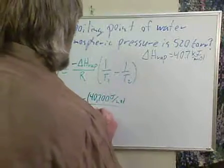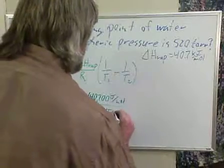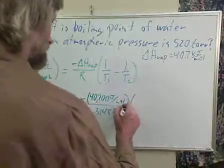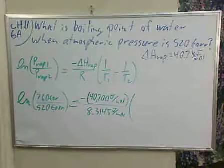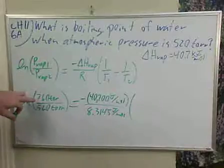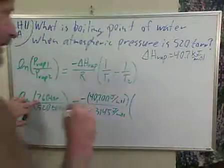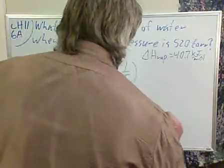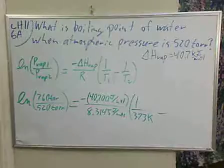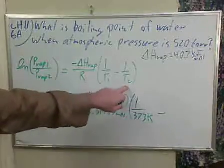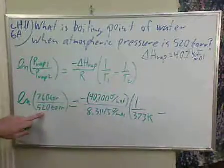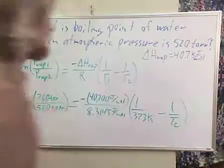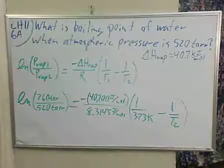And R, of course, is 8.3145 joules per mole kelvin. And it doesn't matter what we use for one and two of this, as long as we're matching them. So 1 is our normal boiling point of water, so it's 1 over 373 kelvin. And we have to use kelvin in this absolute temperature scale. So we're looking for the pressure associated with the 520 torr. So that's our unknown.